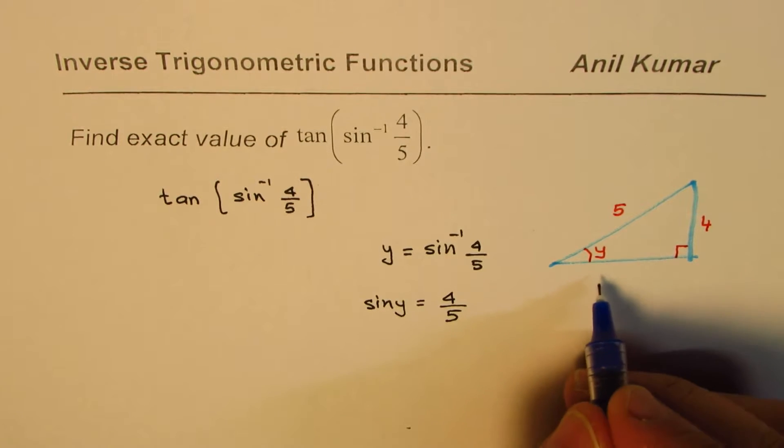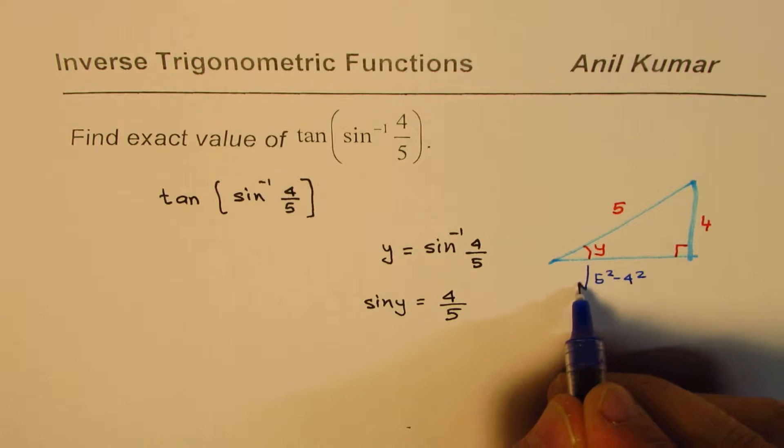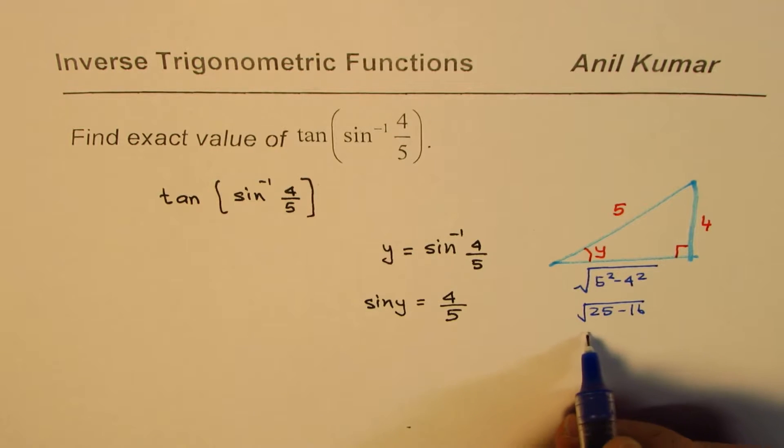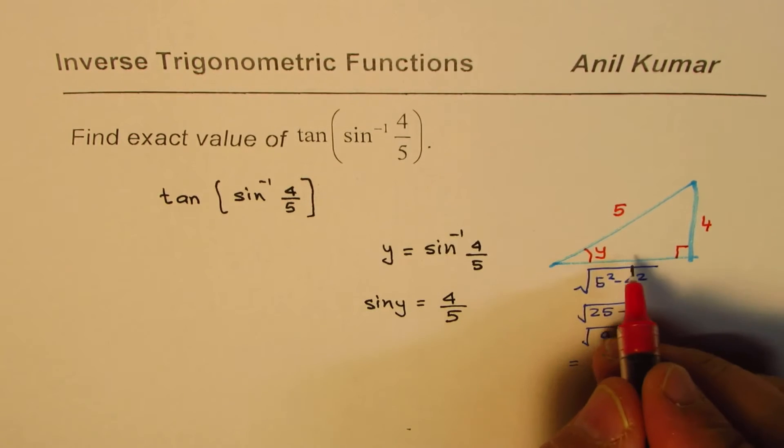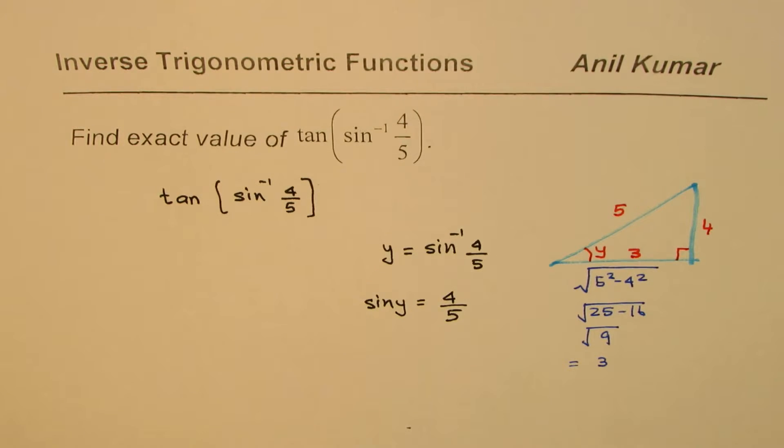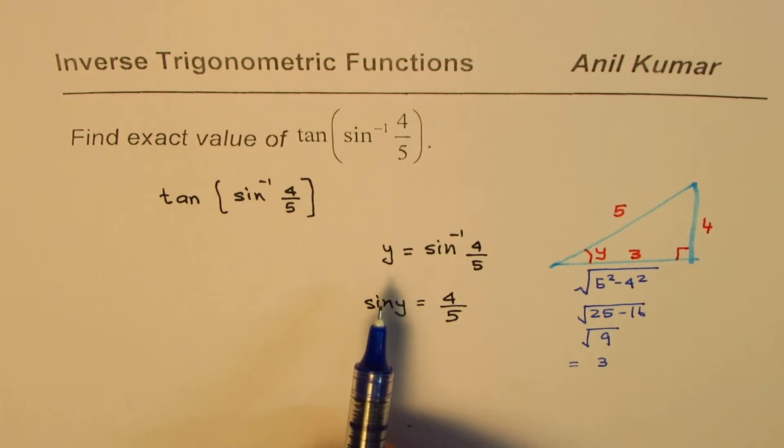Now, if that is the case, then what is the base equal to? This has to be √(5² - 4²), which is √(25 - 16), or √9, which equals 3. So this side is 3 for us.